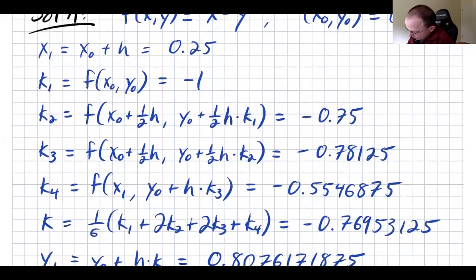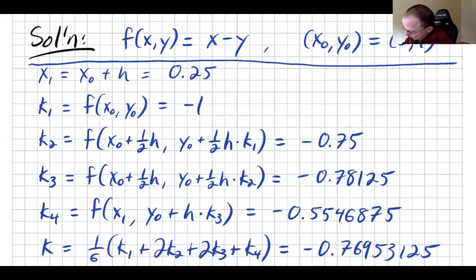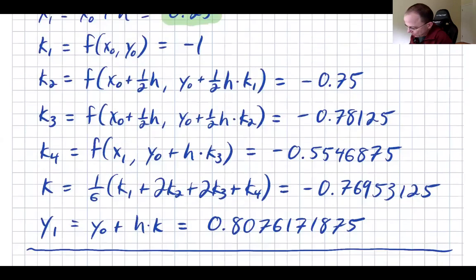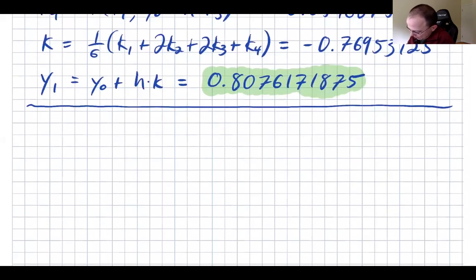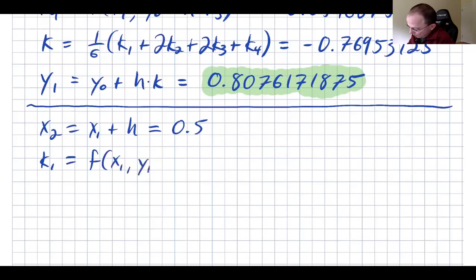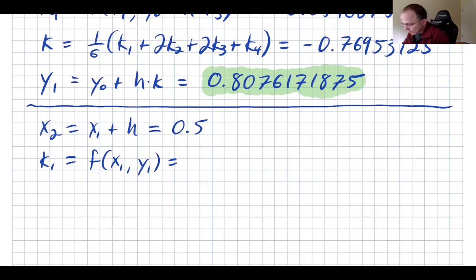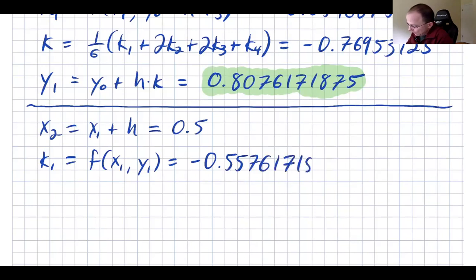Now we do our second step. x₂ = x₁ + h = 0.5. k₁ = f(x₁, y₁), the initial slope estimate at the new point. With x₁ = 0.25 and the correct y value, k₁ = −0.5576171875.